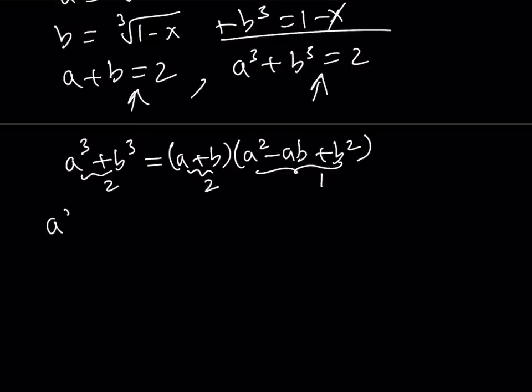So, now I have A squared minus AB plus B squared is equal to 1. And I also know that A plus B is equal to 2. So, this makes another system that we can solve. It's easier because it's quadratic.